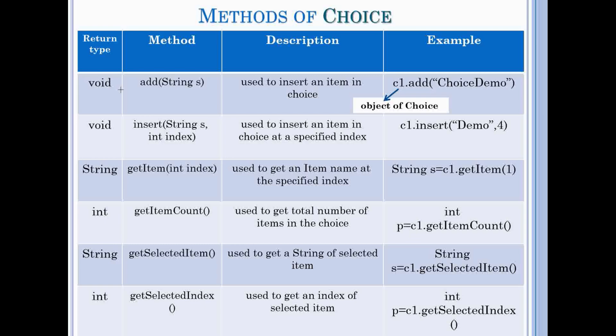After constructor, let's learn the methods of choice in which first method is add with string parameter and return type is void and is used to add an item in choice. This method is used like this.